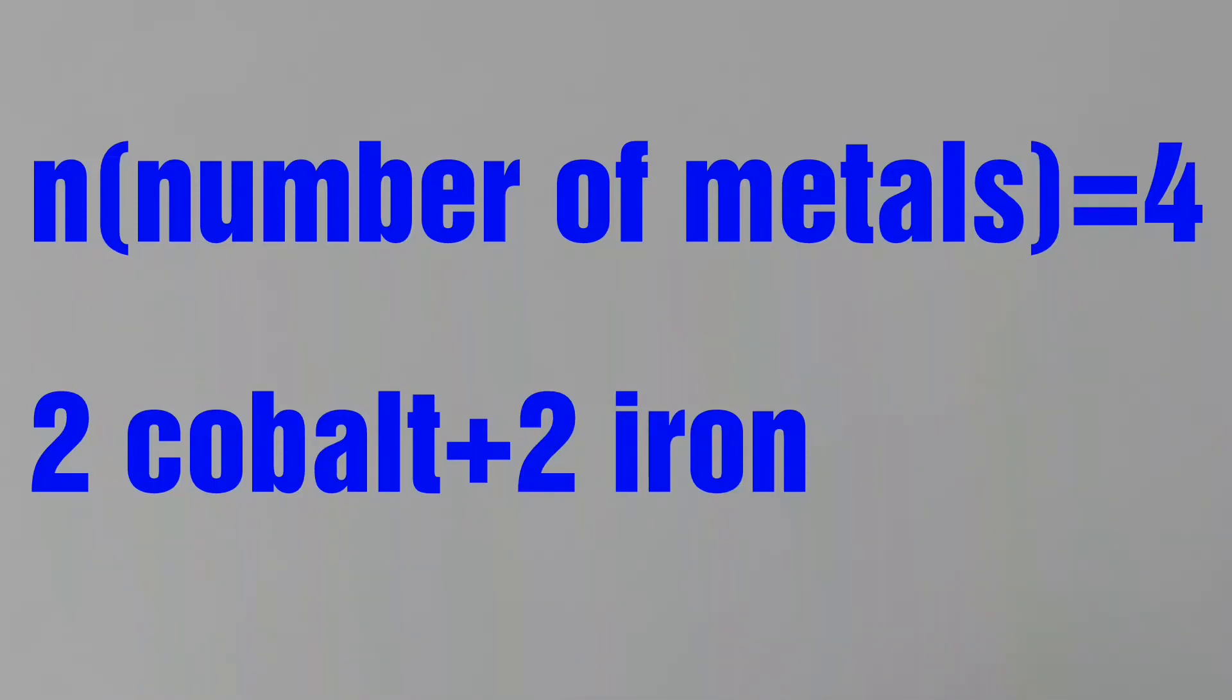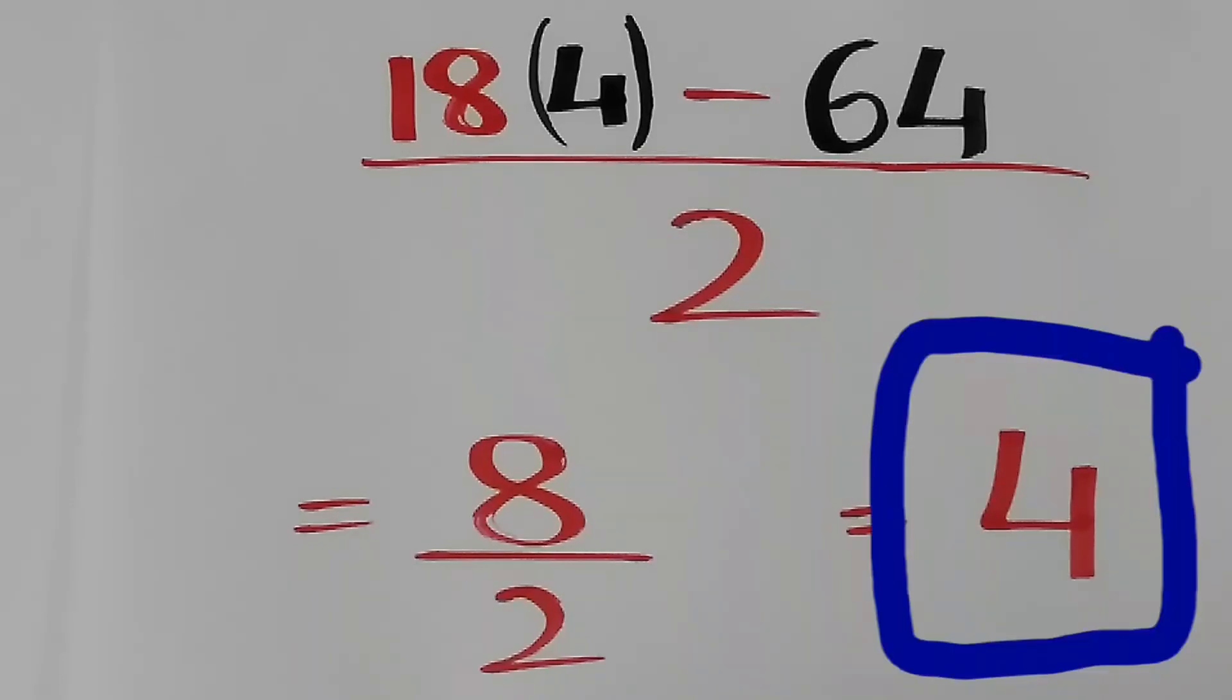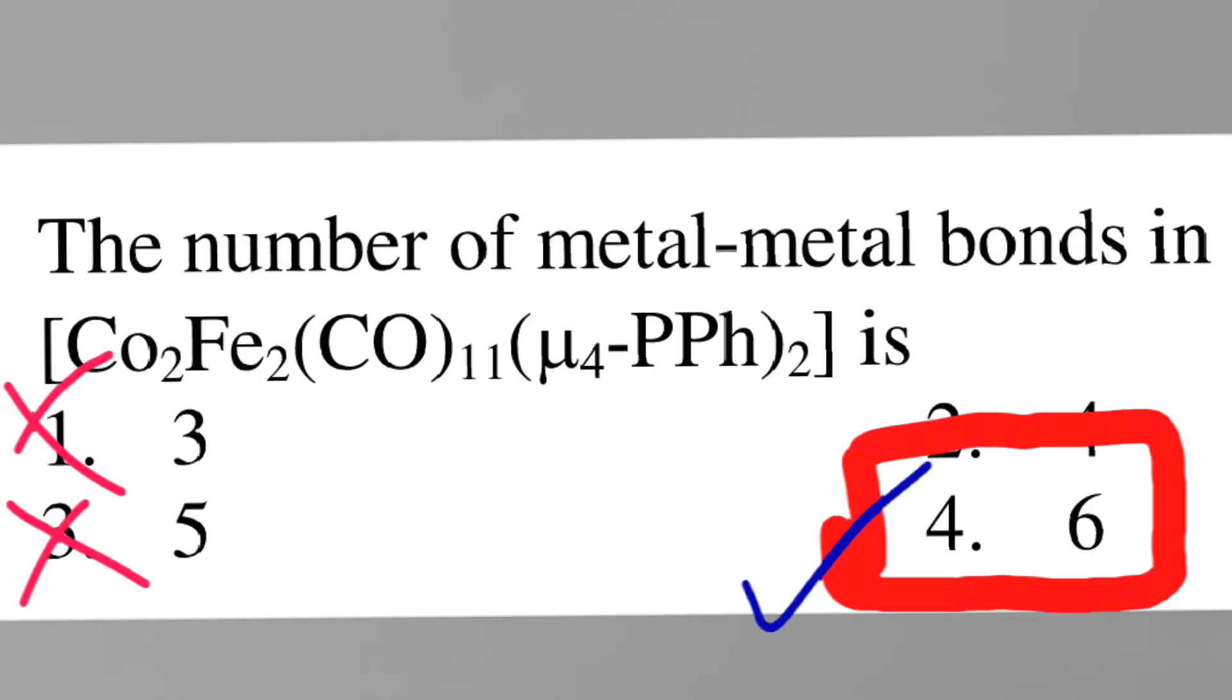Substituting the values for n and the total electron count, n is 4, the total electron count is 64. After solving it, we get the bond order as 4, so option 2 is the right choice.